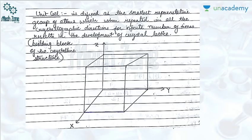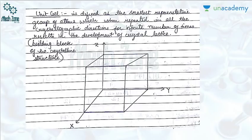In the previous lessons we have already studied about materials and their properties and how they are affected by external stimuli. In this lesson, the first topic is the unit cell. A unit cell is defined as the smallest representative group of atoms which are repeated — that is, there is periodic repetition in space in all crystallographic directions, X, Y and Z, for an infinite number of times, resulting in the development of a crystal lattice. It is essentially the building block of the crystalline structure.